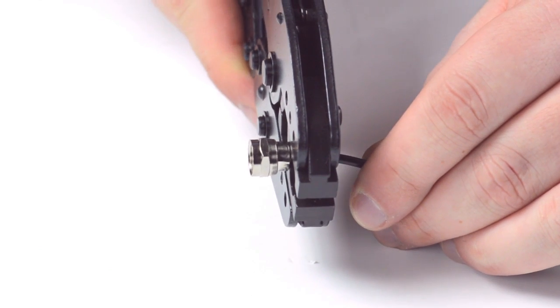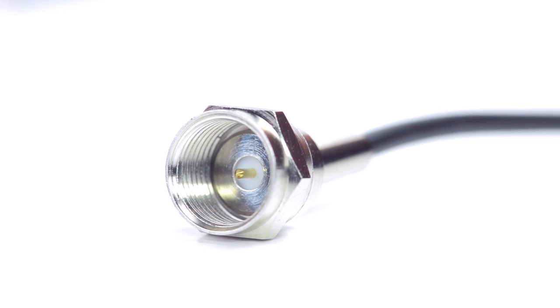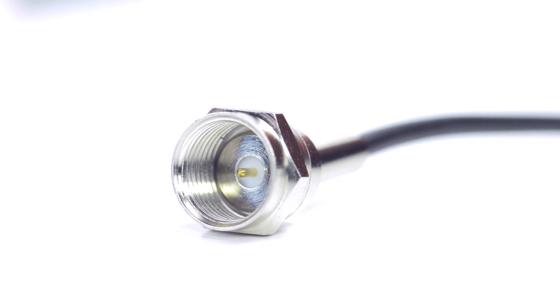Crimp the ferrule onto the outer jacket to complete termination. Congratulations! You have successfully installed the F-type connector.